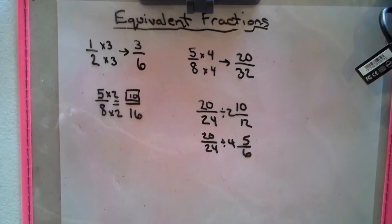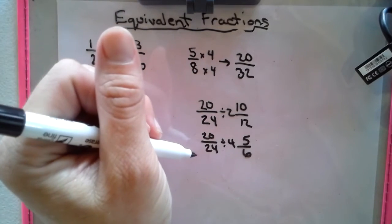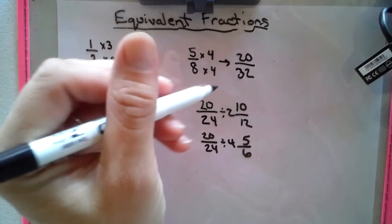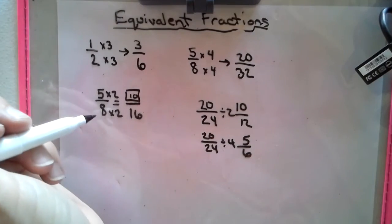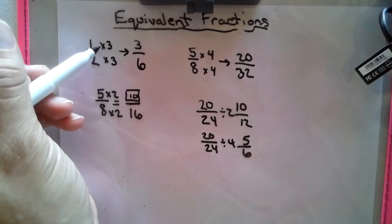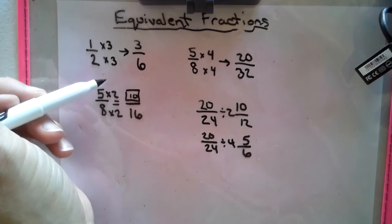It doesn't have to be the greatest common factor in order to get there. It just needs to be a common factor. These are all ways to show equivalent fractions. Whatever you do to the numerator, you do to the denominator.